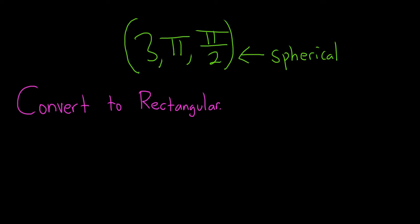In this problem, we have a point in spherical coordinates, and the question wants us to convert it to rectangular coordinates.